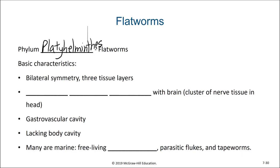When we look at the basic characteristics of these worms, they have bilateral symmetry — so a top and a bottom and a right and a left side. They have three tissue layers and they have a central nervous system, including a brain, which is a cluster of nerve tissue in the head.